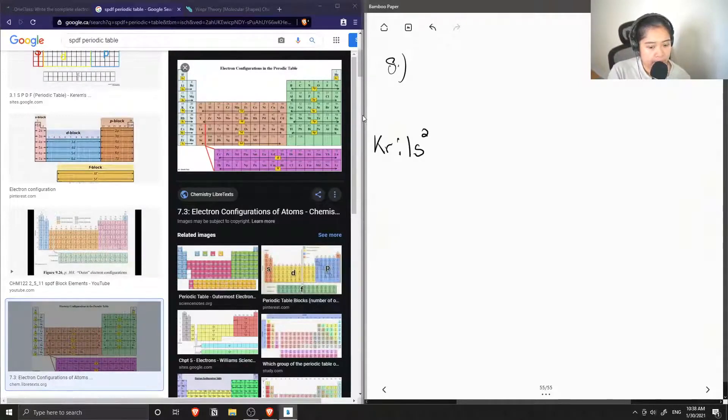So moving down to the next row, we write row 2, block letter s, and again only two electrons can fit here. Then when we move across, we go to the p orbital. So row 2, block letter is p, and the p orbitals can hold a maximum of six electrons. So we can write 2p6.